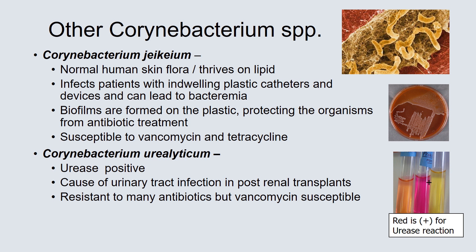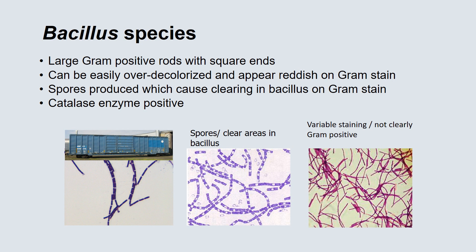Other Corynebacterium species are also important but do not have the public health significance of C. diphtheriae. Corynebacterium JK is found on normal human skin, loves lipid, and primarily infects patients with indwelling plastic catheters and devices, leading to bacteremia. Biofilms form on the plastic, protecting the organisms from antibiotic treatment. This organism is only susceptible to vancomycin and tetracycline. Corynebacterium urealyticum mostly causes urinary tract infections in post-renal transplant patients and is resistant to many antibiotics, but susceptible to vancomycin.